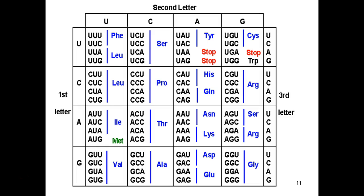There's one special codon: AUG codes for the amino acid methionine. For bacteria, this tells the ribosome to start here — that's the start codon. That's where the ribosome starts matching up transfer RNAs and attaching amino acids in the sequence told by the messenger RNA, based on these groups of three nucleotides known as codons.